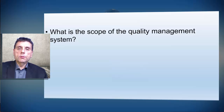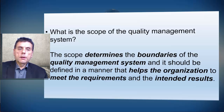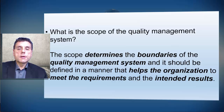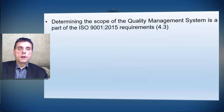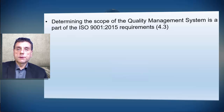What is the scope of the Quality Management System? The scope determines the boundaries of the Quality Management System and it should be defined in a manner that helps the organization to meet the requirements and intended results. Determining the scope of the Quality Management System is a part of the ISO 9001:2015 requirements, particularly Clause 4.3.